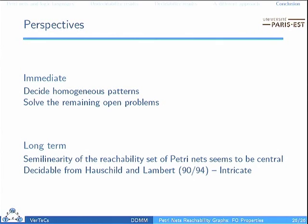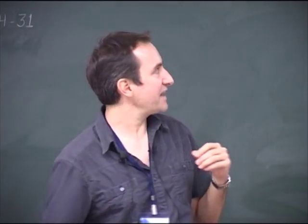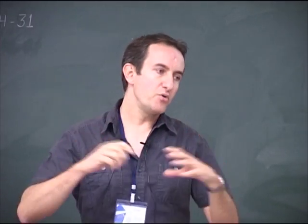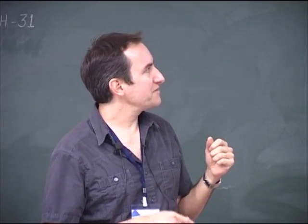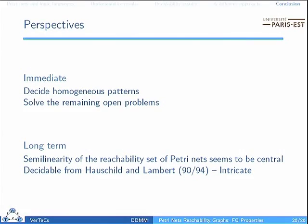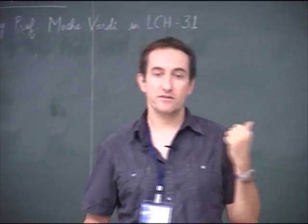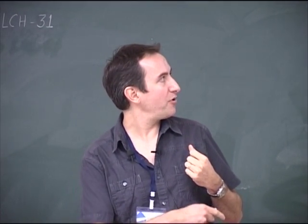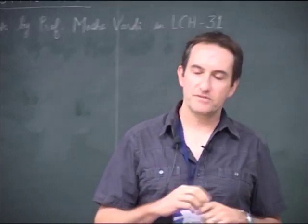What we would like to do is solve the open problems. We also would like to decide for homogeneous patterns — for example, to find adjacent reachable markings. On the long term, there is a connection to semi-linearity, which I used extensively. The problem of semi-linearity for a Petri Net is very important and decidable from results of Hauschild and Lambert from 1990 and 1994 — but this decidability is really very intricate. It would be interesting to have more geometrical characterization of these things. Thank you very much for your attention.